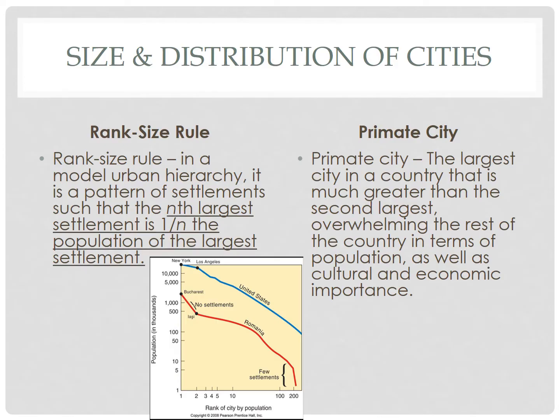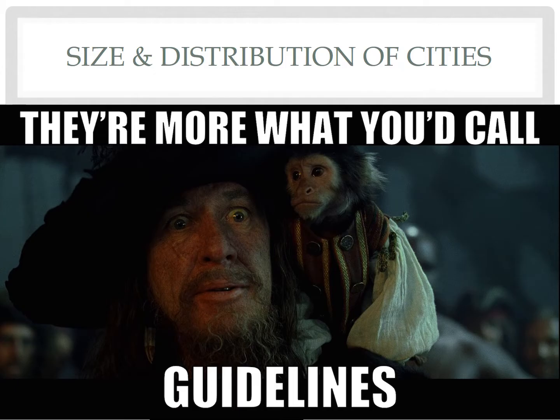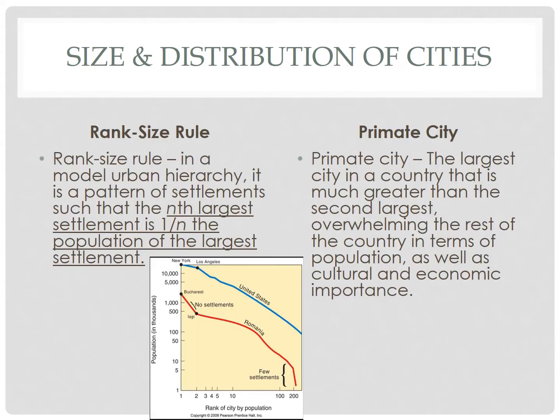The rank size rule points out that there tends to be a pattern in the relationship between the population size of cities and their rank in the urban hierarchy. But it's more of a guideline than an actual rule. Basically, the size of a settlement is inversely proportional to its rank in the urban hierarchy.